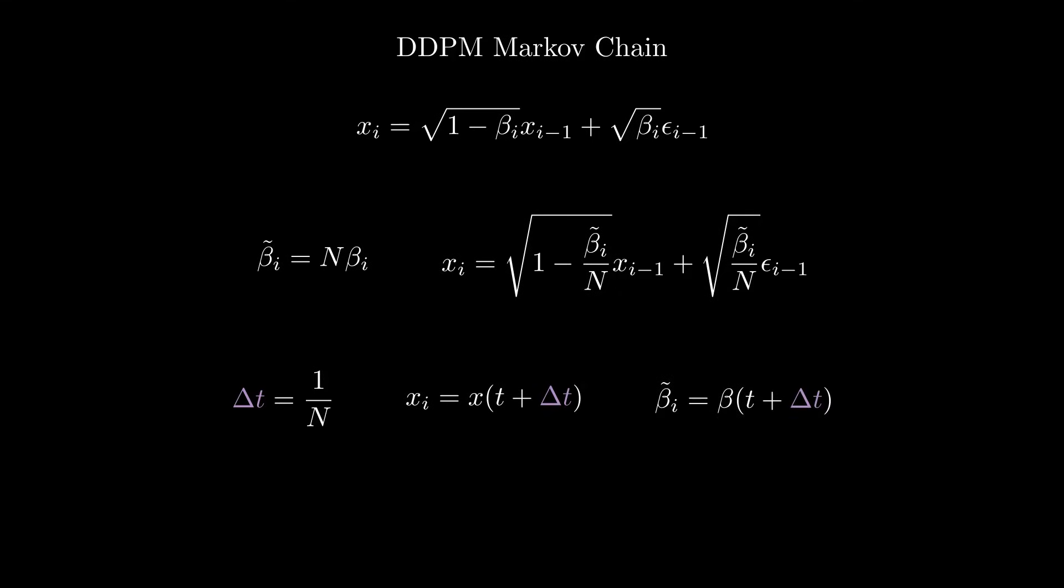We'll say that x at discrete step i is simply the image at time t plus delta t, and beta tilde at step i becomes beta evaluated at time t plus delta t. If we replace this in our previous expression, we get this formulation, which only depends on t and delta t.